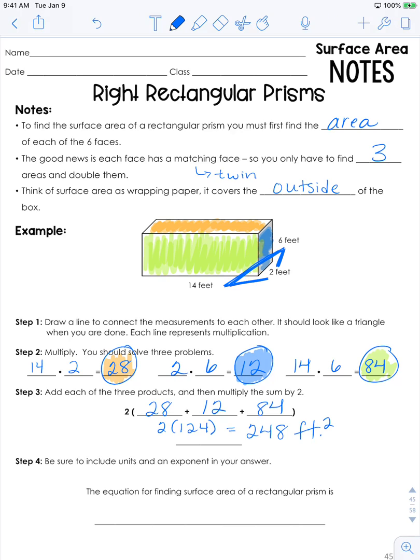Be sure to include the units and exponent in your answer, which we did. So the equation for finding the surface area of a rectangular prism is going to be 2 times the length times the width plus 2 times the length times the height plus 2 times the width times the height. And that is going to be equal to surface area.